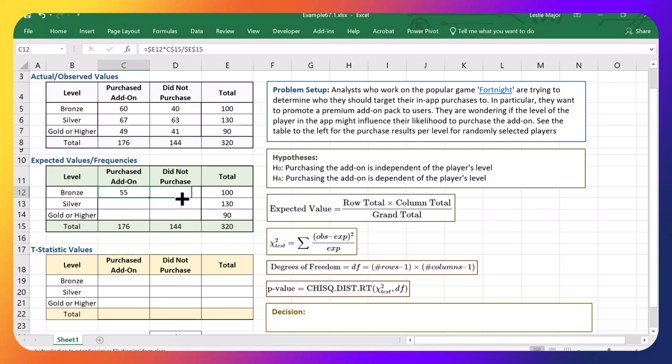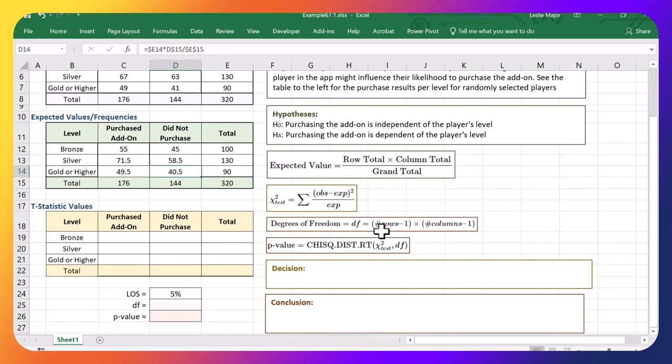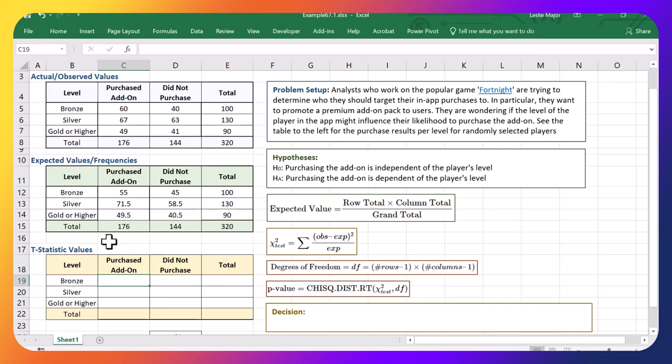Now once you've done this calculation, you just pull it across and down if you locked the right values. So you lock column E, you lock row 15, and then this value, you lock it the whole way through because you always want to divide by that grand total. So those are our expected values, or what we would expect to get if there was no difference in the purchasing between the different levels.